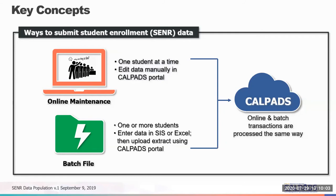For the SENR record, there are two ways to submit your student enrollment data. You can do it one by one using online maintenance, logging into the CALPADS web portal and updating student information like data entry — similar to managing your student information system, though this can be time consuming. Alternatively, CALPADS has a batch file functionality where you can extract data from your student information system and submit in mass for several students via batch file upload. Files can be submitted in an Excel spreadsheet format or a text file such as a CSV. Regardless of method, data is subject to the same transaction rules and validations.